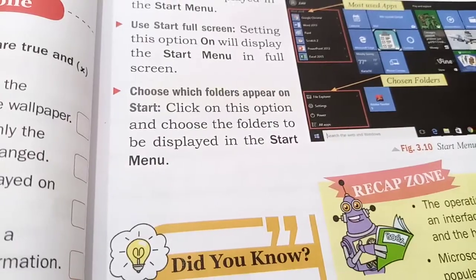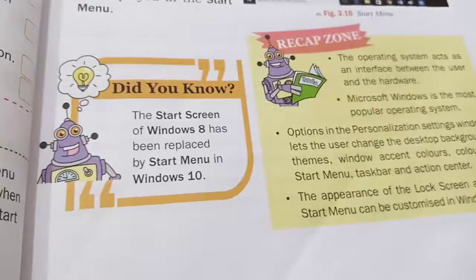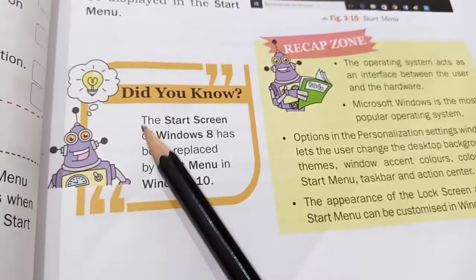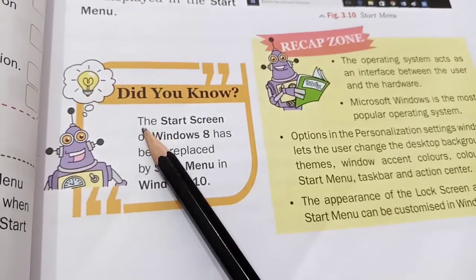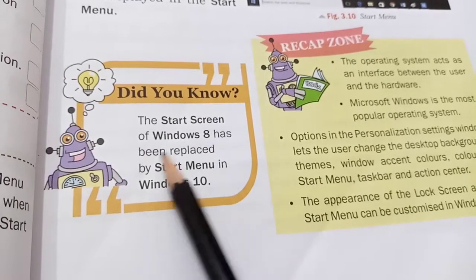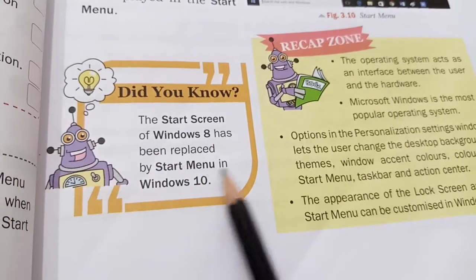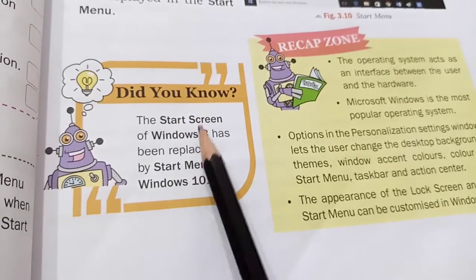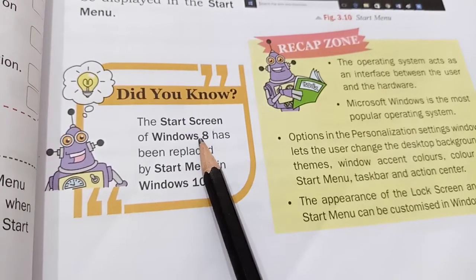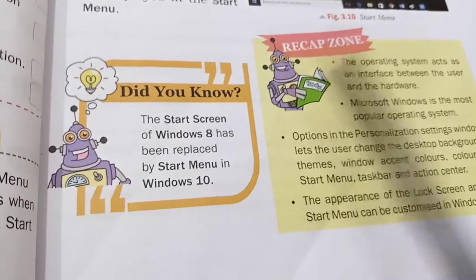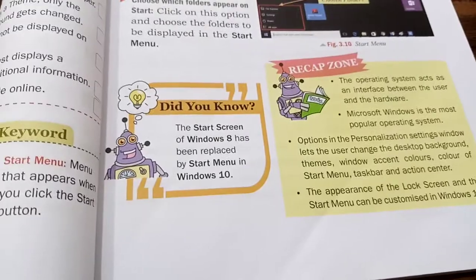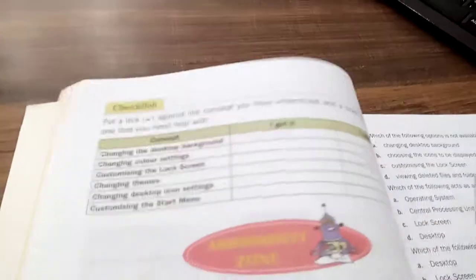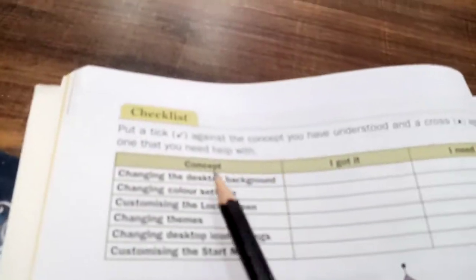So those are the three main options. Now, the start screen of Windows 8 has been replaced by the start menu in Windows 10. The start screen which was in Windows 8 was changed when Windows 10 was released.